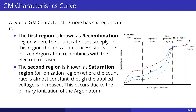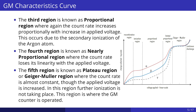The second region is known as the saturation region, where the count rate is almost constant even though the applied voltage is increased. This occurs due to the primary ionization of the argon atom. The third region is known as the proportional region, where the count rate increases proportionally with increase in applied voltage. This occurs due to the secondary ionization of the argon atom.